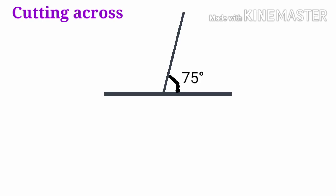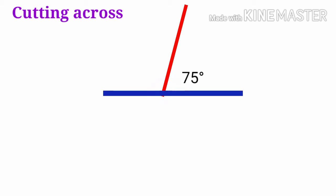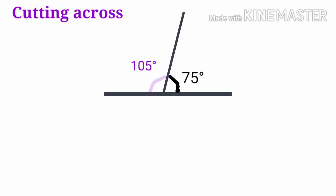Cutting across — this is a line drawn to another line. Therefore these angles are a linear pair, and the sum of these angles is equal to 180 degrees. This angle is 180 minus 75, that is equal to 105 degrees.